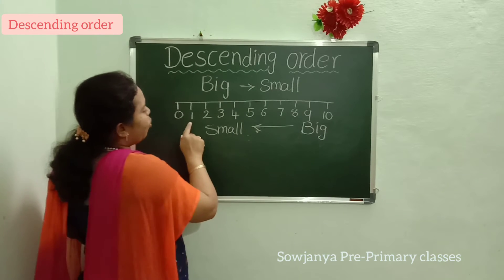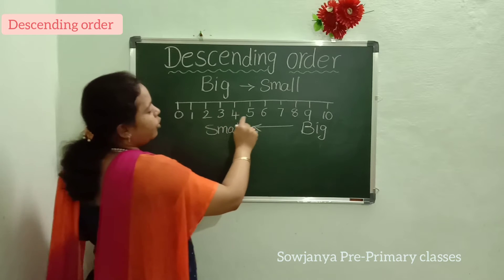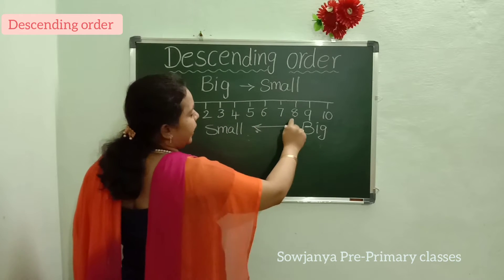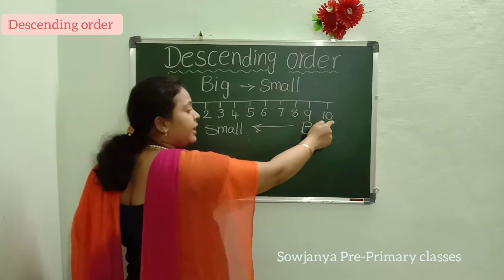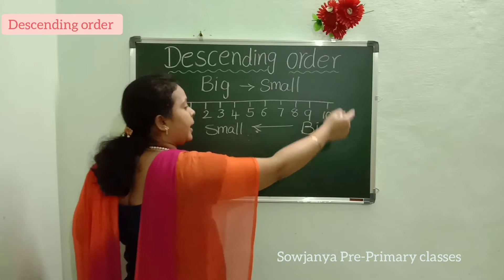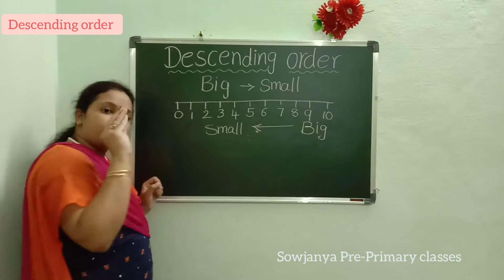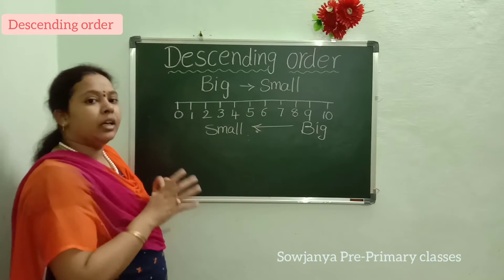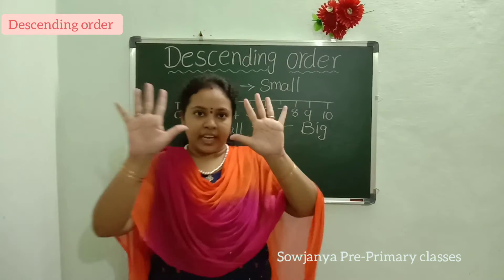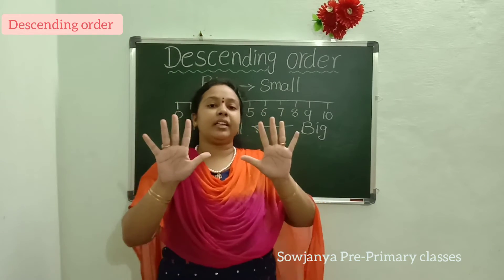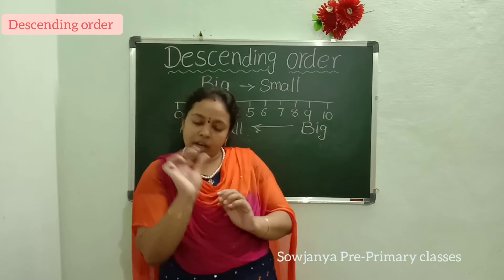See here: 0, 1, 2, 3, 4, 5, 6, 7, 8, 9, 10. Here, 10 is the big number and 0 is the small number. 10 is the big number, 0 is the small number.